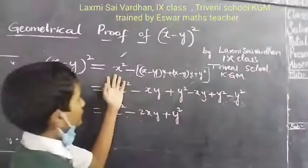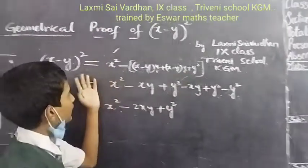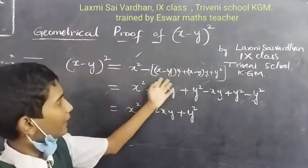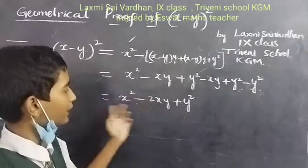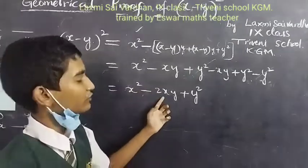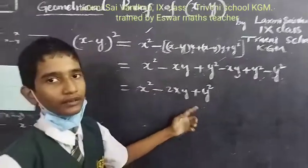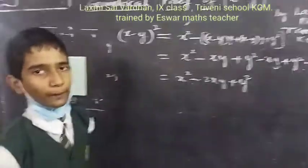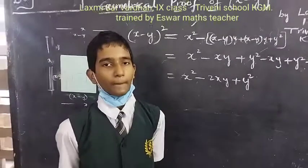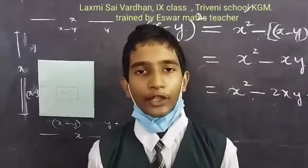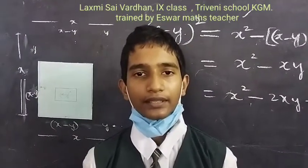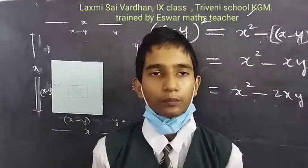After the calculation, X minus Y whole square equal to, by calculating, we get X square minus 2XY plus Y square. Thank you. Thank you to my math teacher and school management and my parents. Thank you.